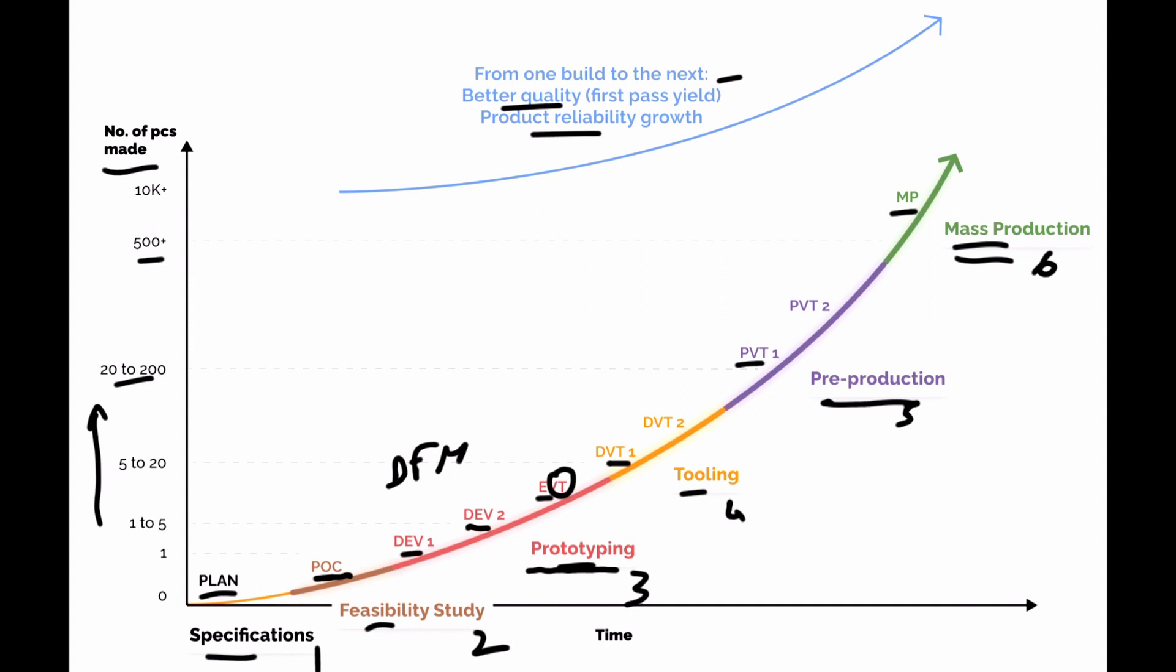This usually is based on 3D printed parts or CNC machine parts. Sometimes they use soft tooling. These first prototypes will be tested for performance, for reliability. It's important to start to have a quality plan and a reliability plan.